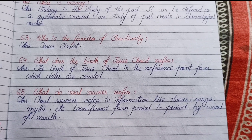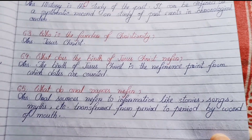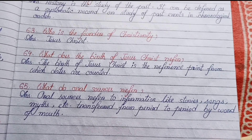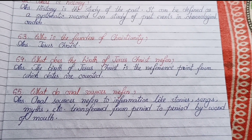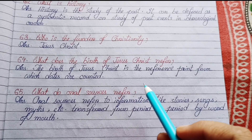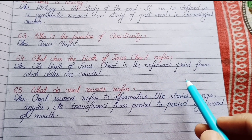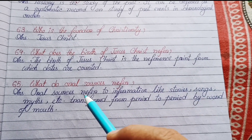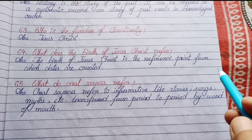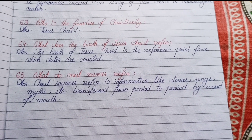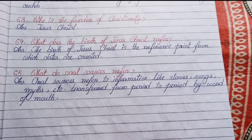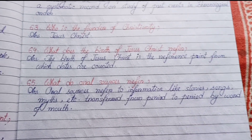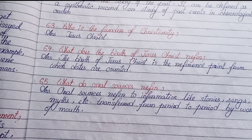Number sixty-three: Who is the founder of Christianity? Jesus Christ. Number sixty-four: What does the birth of Jesus Christ refer to? The birth of Jesus Christ is the reference point from which dates are counted.